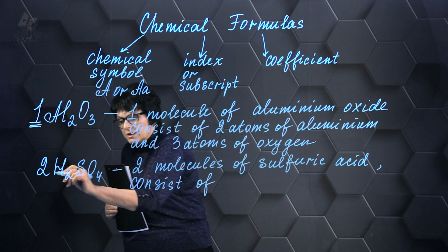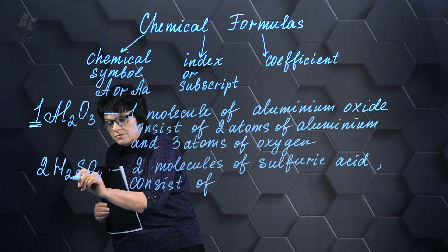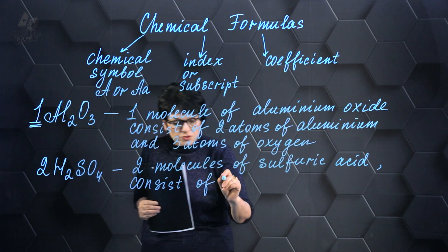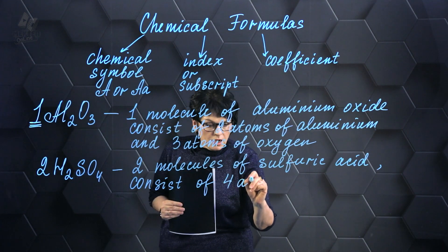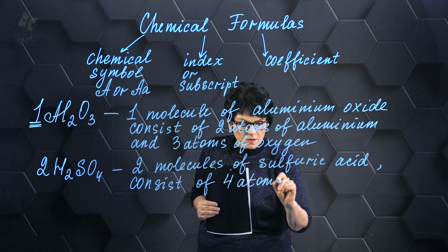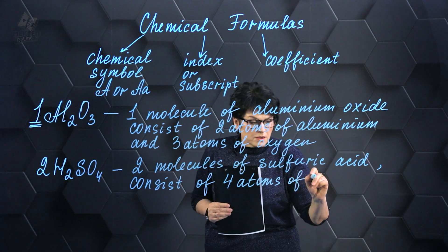Now let's see, there's a coefficient of 2 in front of the formula. 2 times 2 equals 4 individual particles known as atoms, which are the building blocks of the element hydrogen.